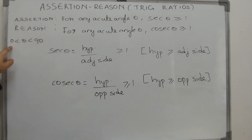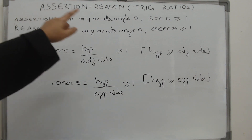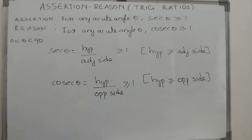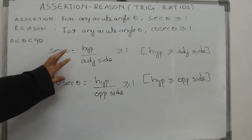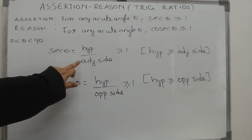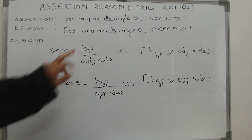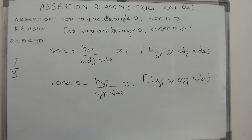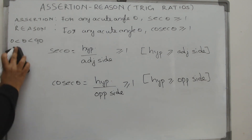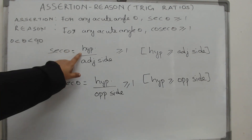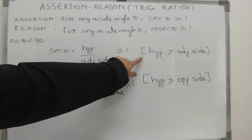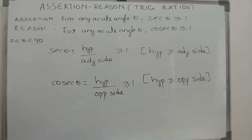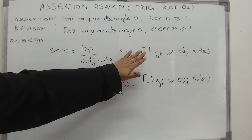Now for the next question: for any acute angle — any angle between 0 and 90 degrees — the secant and cosecant values will always be greater than one. Secant theta is hypotenuse divided by adjacent side, and since the numerator is greater than the denominator, the fraction is always greater than or equal to one. The question is: why is the hypotenuse greater?